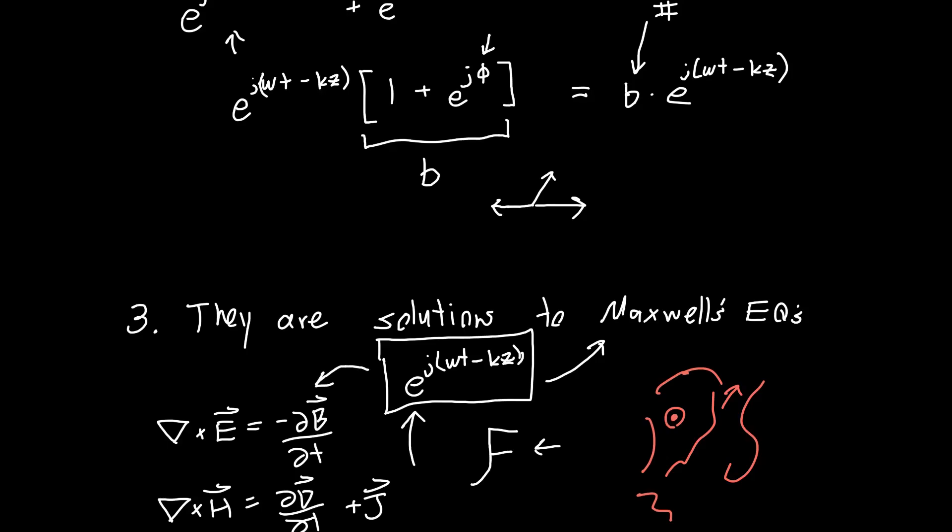And that might make you a little uncomfortable if you're not super familiar with complex numbers. But they are, they're real in the sense that they do solve Maxwell's equations. And it turns out that using these solutions actually makes analyzing things like power, especially power in the context of oscillating fields, so electromagnetic waves, it actually makes it simpler to deal with these complex solutions as opposed to dealing with sines and cosines.